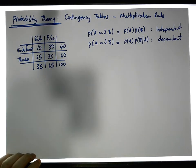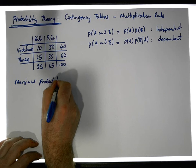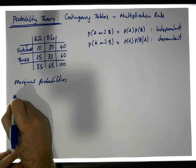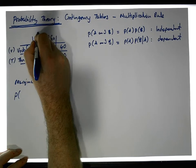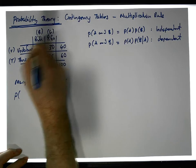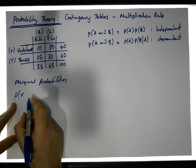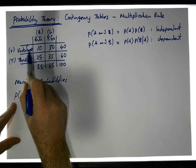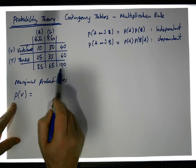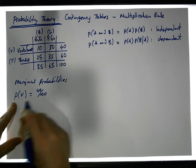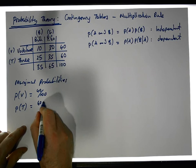Let's have a look at the marginal probabilities. I'll use V for Vodafone, T for Three, B for bill pay, and G for pay-as-you-go. The probability of randomly selecting a Vodafone customer: there are 40 Vodafone customers out of 100, so the probability is 40 out of 100. The probability of getting a Three customer: there are 60 chances out of 100.